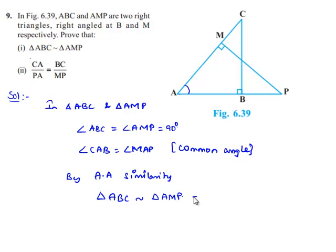We know that this is our first proof. We know that when two triangles are similar then corresponding sides will be in proportion. So here AB by AM is equal to BC by MP is equal to CA by PA.